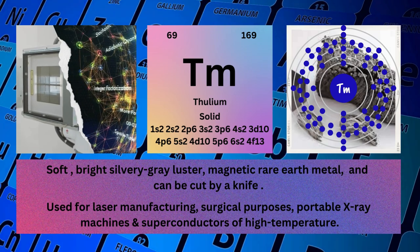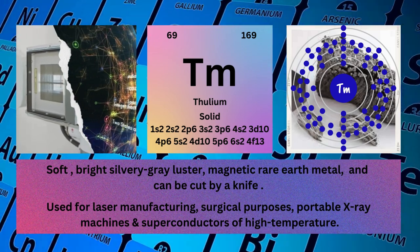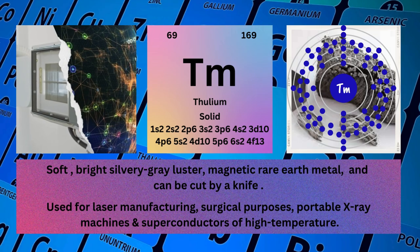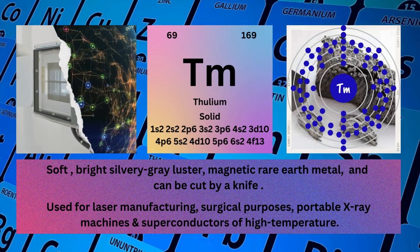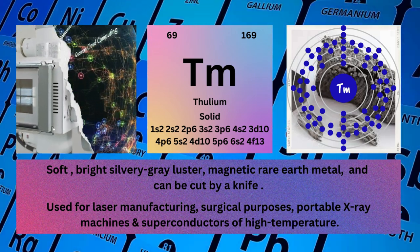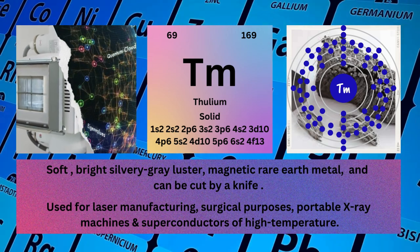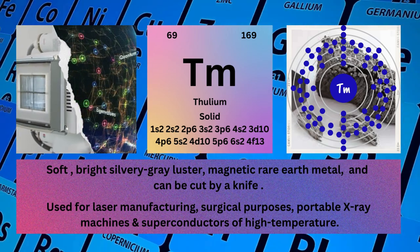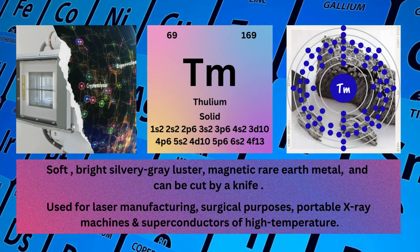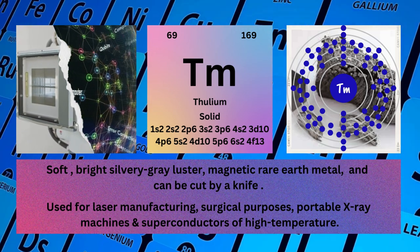Electronic configuration: 1s²2s²2p⁶3s²3p⁶4s²3d¹⁰4p⁶5s²4d¹⁰5p⁶6s²4f¹³. Physical properties: Soft, bright silvery-gray luster, magnetic rare earth metal that can be cut by a knife.